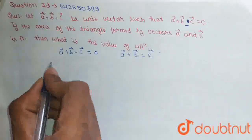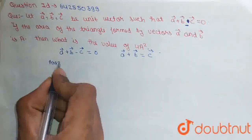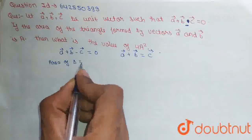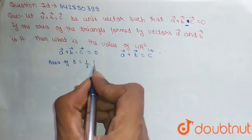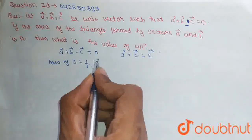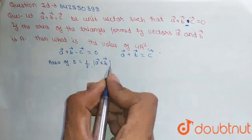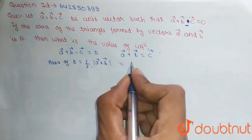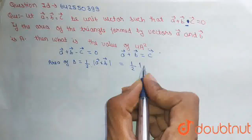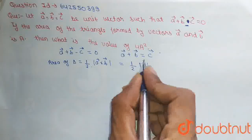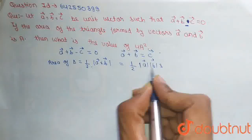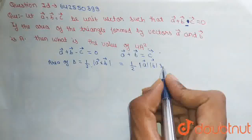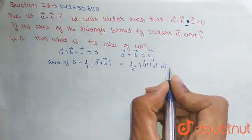Now, as we know that the area of a triangle is equal to half base into height, which is half of the modulus of A vector cross B vector. When we simplify this, we can write this as one half times the modulus of A vector into the modulus of B vector into sin theta.